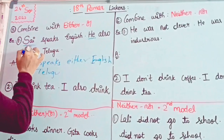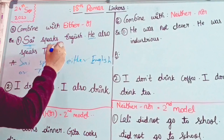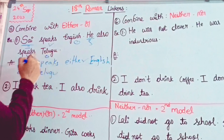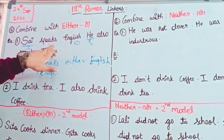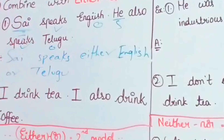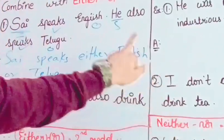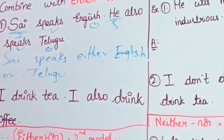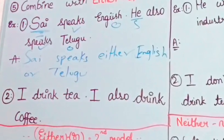This is subject, this is verb, this is object. So in the first sentence, the verb is speaks. Clear? That's the same rule.